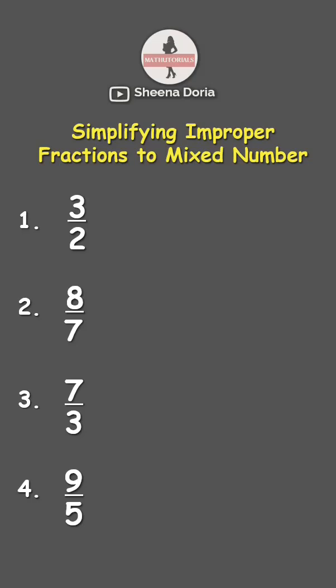To simplify, divide the numerator by the denominator. So 3 divided by 2 is 1. 1 times 2 is 2, then 3 minus 2 is 1. Our answer is 1 and 1 half.